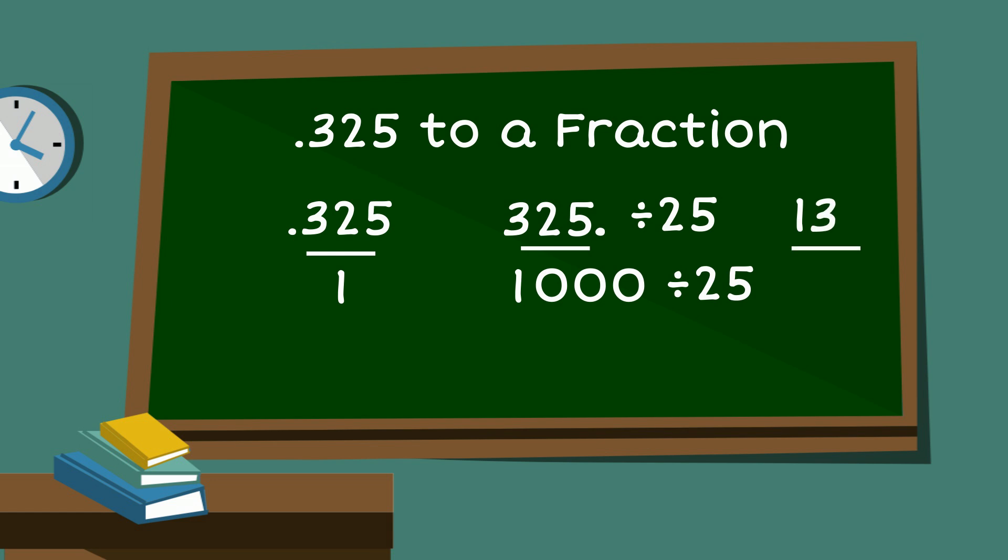And 1000 divided by 25 is 40. 13 is a prime number so I know I am reduced as far as we can go. So .325 as a fraction equals 13/40.